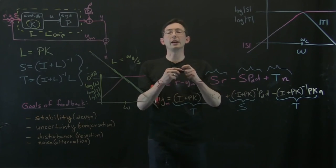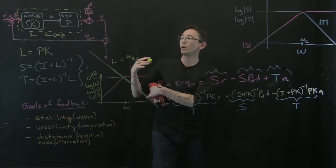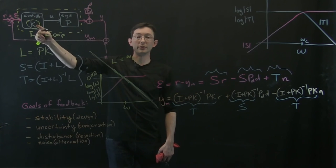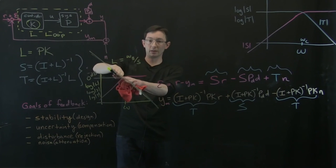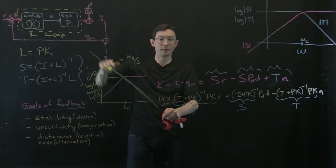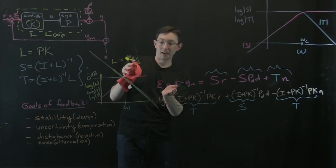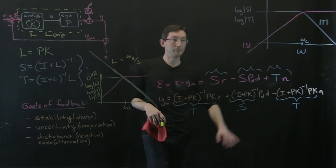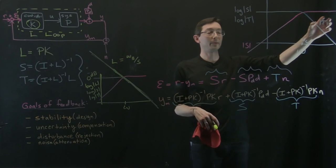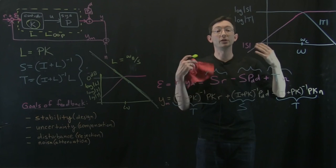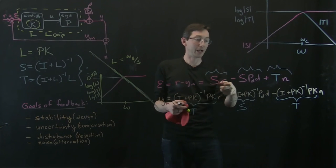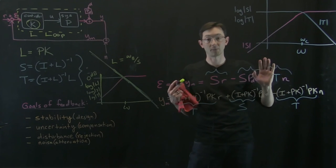So this should give us some pretty intuitive gut feel for what we want our controller to do given some plant. We want our system to look like this integrator, this nice clean integrator that has high gain at low frequency and low gain at high frequency because it has good sensitivity and complementary sensitivity properties, which in turn give rise to good reference tracking, disturbance rejection, and noise attenuation.